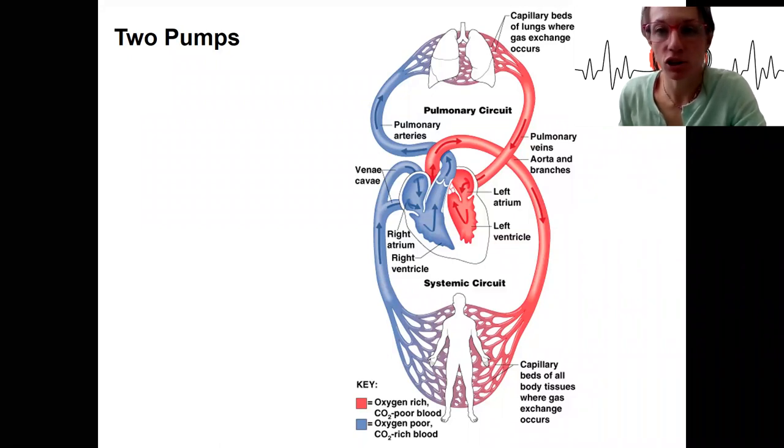So we're going to look in more detail at the pressure changes in the heart, and when we do this we're going to look at the left ventricle, the left side of the heart only as an example. Before we do that, I want to let you know the pressure differences in the two circuits.